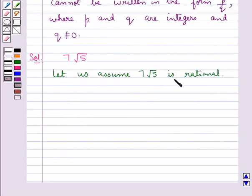Since it is rational, we can find coprime a and b, where b is not equal to 0, such that 7 root 5 is equal to a upon b.